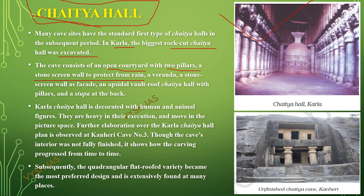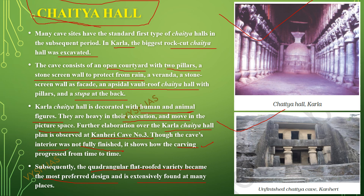The Karla chaitya hall has a veranda, a stone screen wall as facade, an apsidal wall-roof chaitya hall with pillars, and a stupa at the back. It is decorated with human and animal figures that are heavy in execution and move in the picture space. An elaboration over the Karla chaitya hall is observed in Kanheri cave number three, which was not fully finished, showing how carving skills progressed over time. The quadrangular flat-roofed variety became the most preferred design and is found in many places.